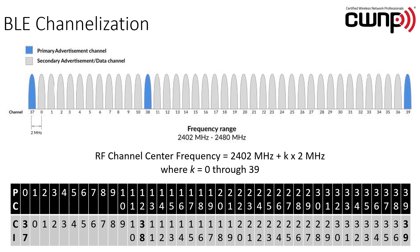Where it gets confusing is when you see the algorithm to calculate the channel numbers and then you see a channel map like the one pictured here — you might feel there is a conflict between the two. The frequency algorithm for BLE is 2402 MHz plus k times 2 megahertz, where k is 0 through 39. So you would logically think the channel centered on 2402 MHz would be channel 0, yet when we look at the graphical representation, we see channel 37 there, and channel 0 is actually centered on 2404 MHz. So what's the difference? That's what the table at the bottom is for.